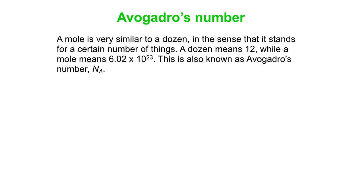So when you say a dozen eggs, it means you have 12 eggs. If you said you had a mole of eggs, that would be 6.02 times 10 to the 23rd eggs. That's a lot of eggs. And that number is also known as Avogadro's number.